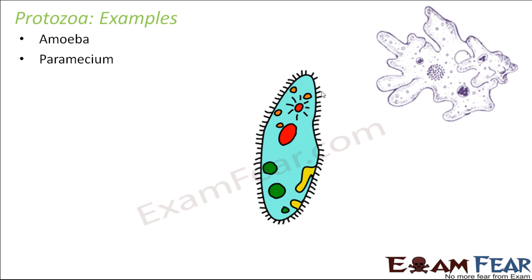Another example is paramecium. Paramecium has cilia — hair-like structures on the outside of its body — which help it move from one place to another. Unlike fungi, which are immobile, protozoa are all mobile and have organs that help them with locomotion.